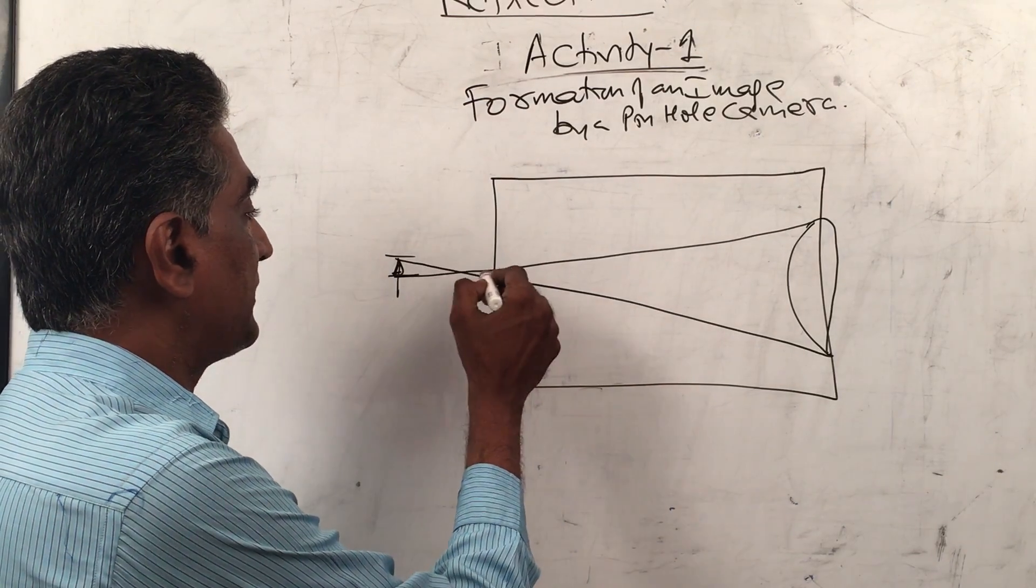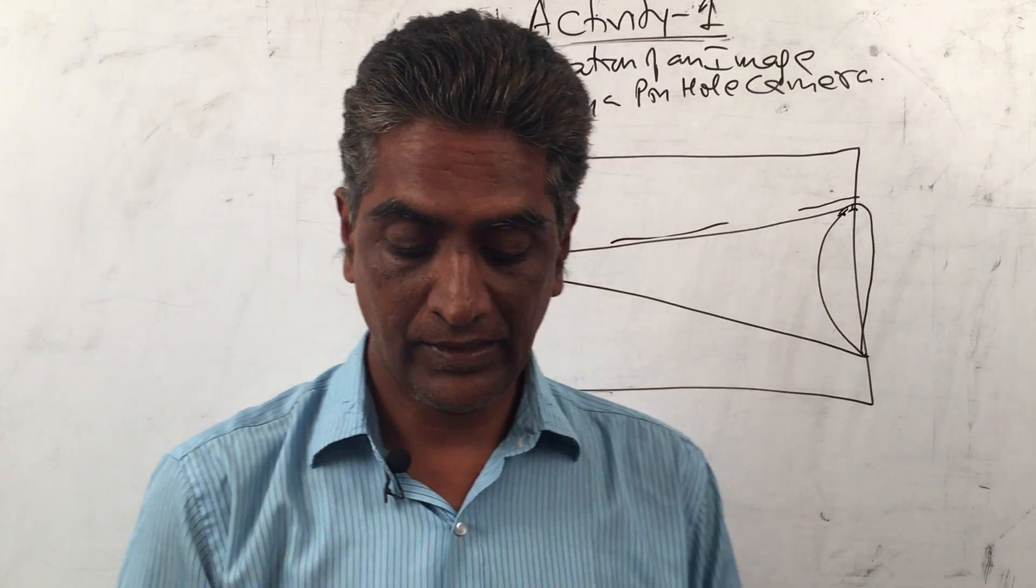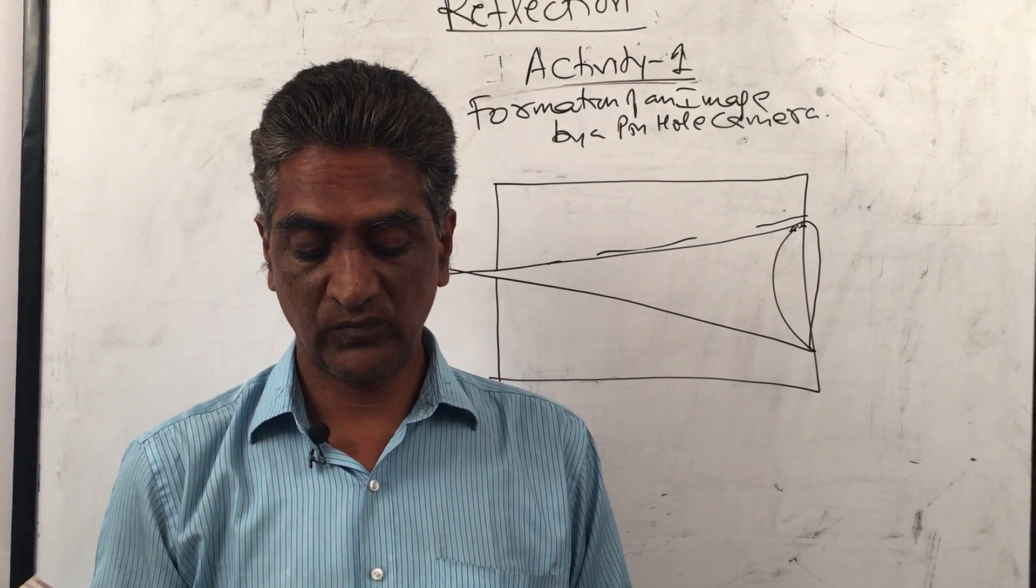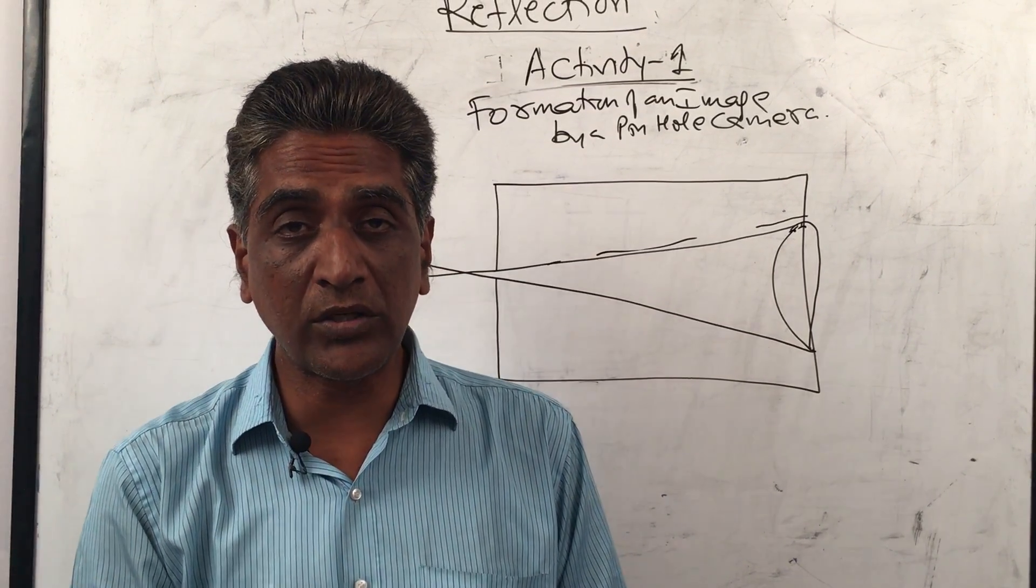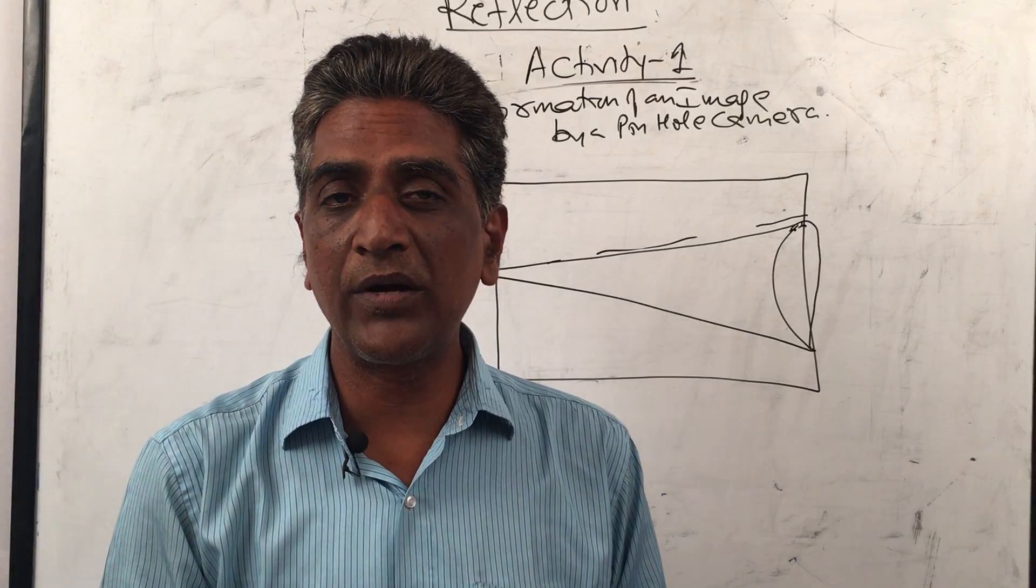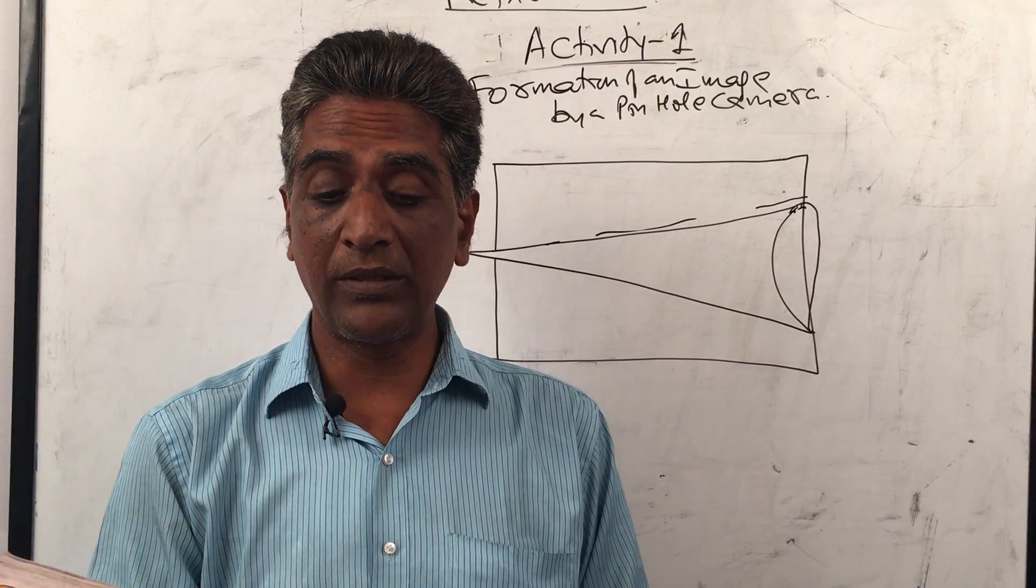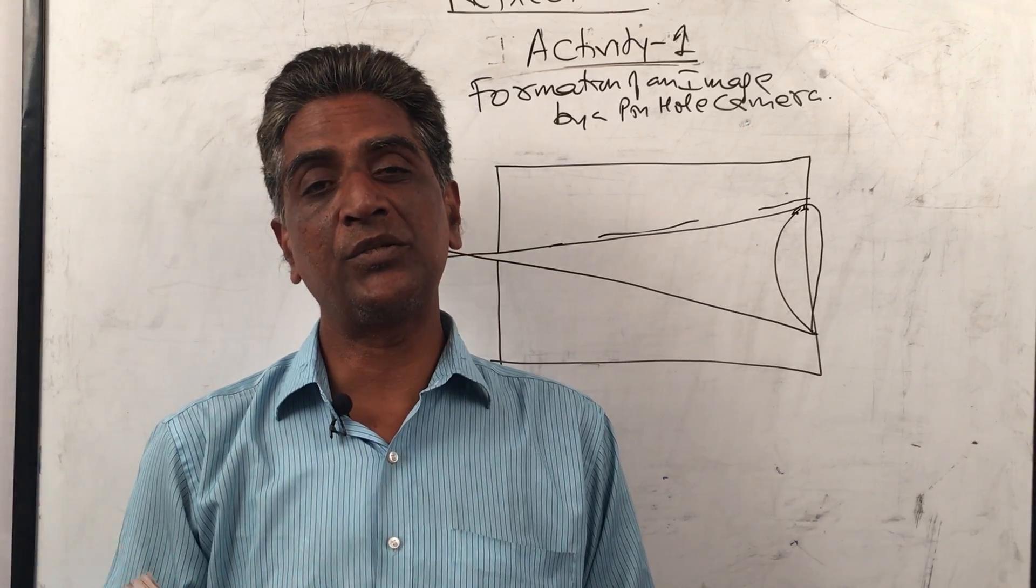So if the size is made bigger, they fall on different points on the screen. Similarly, the rays coming from the bottom of the candle flame also fall at different points on the screen. Thus, we get a blurred image on the screen due to the big hole of the camera as shown in figure one.